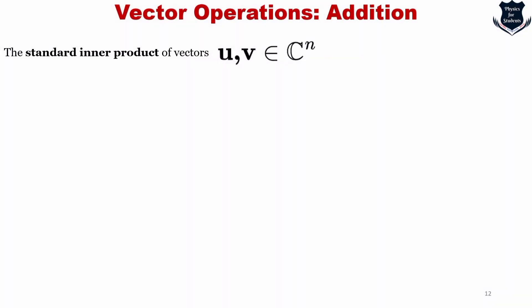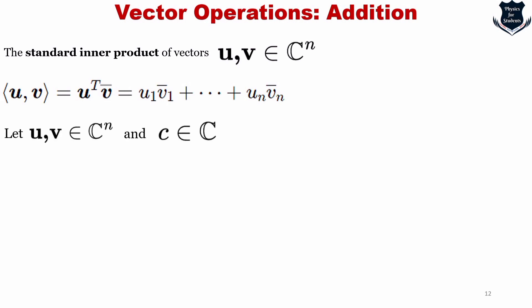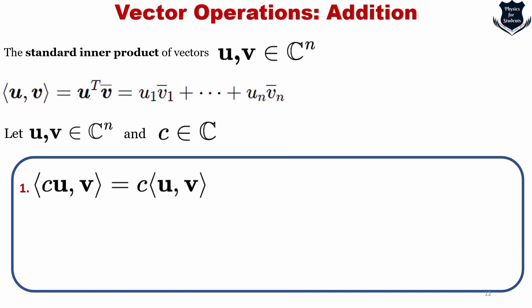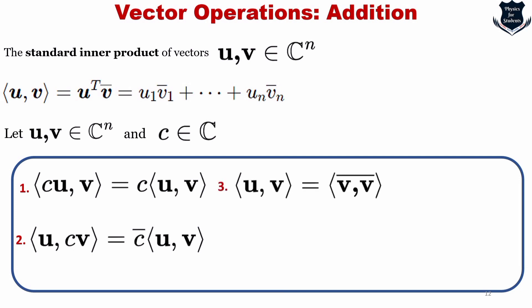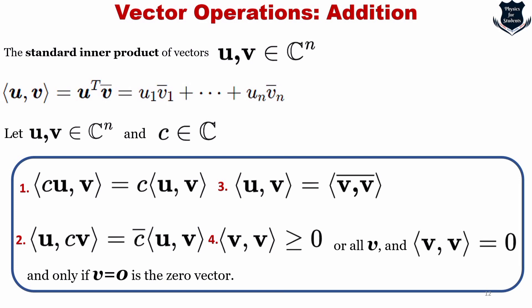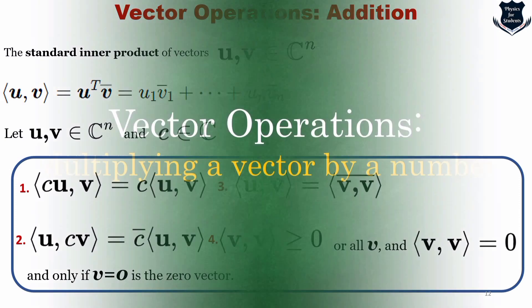The standard inner product of u and v in C^n uses the conjugate transpose. For u, v in C^n and a scalar c in the complex plane, the inner product satisfies: ⟨cu, v⟩ = c⟨u, v⟩; ⟨u, cv⟩ = c̄⟨u, v⟩; and ⟨v, v⟩ > 0 for all v, with ⟨v, v⟩ = 0 if and only if v is the zero vector. These are the standard inner product properties on the complex plane.